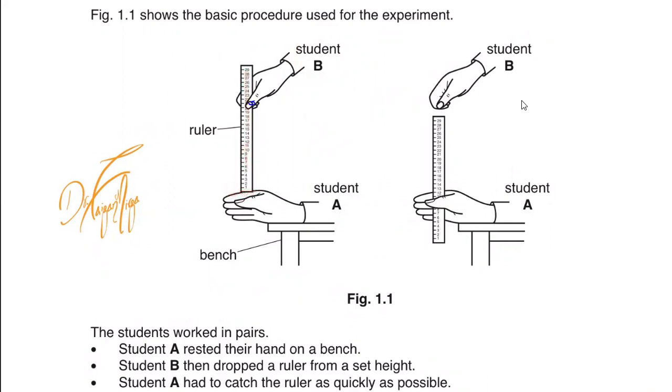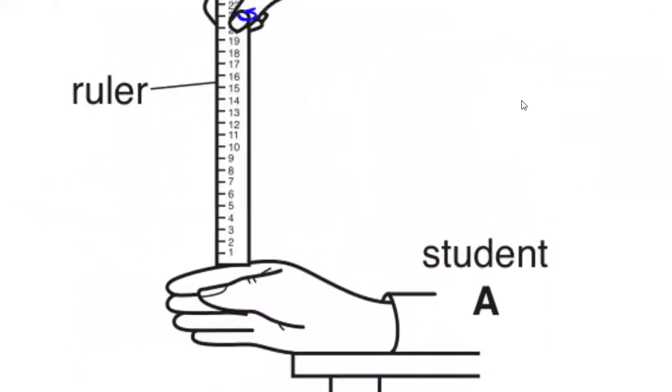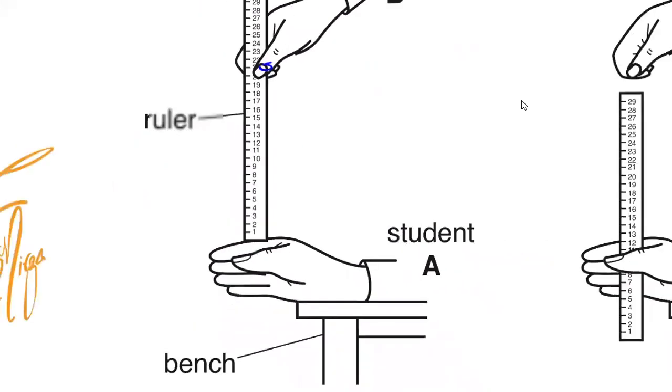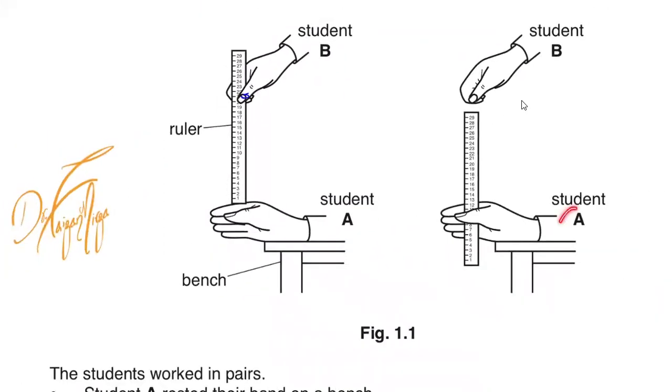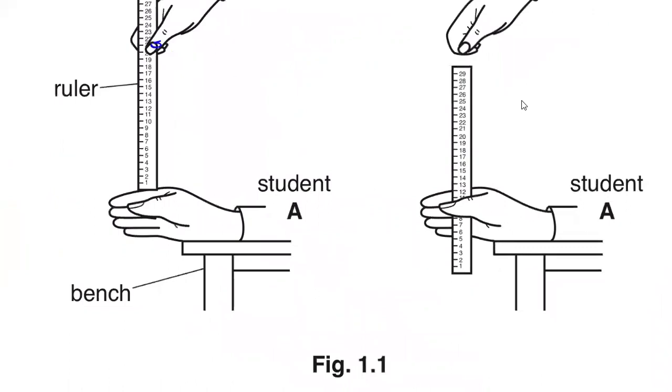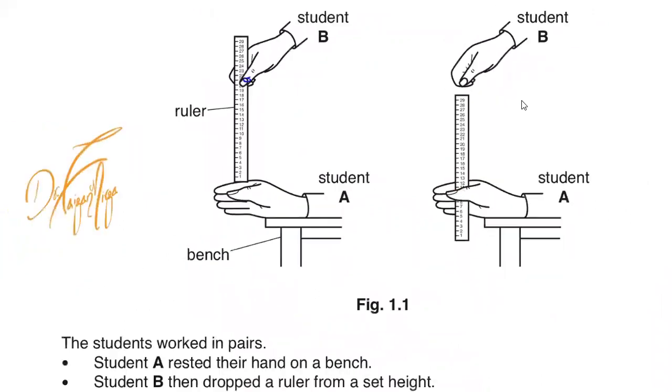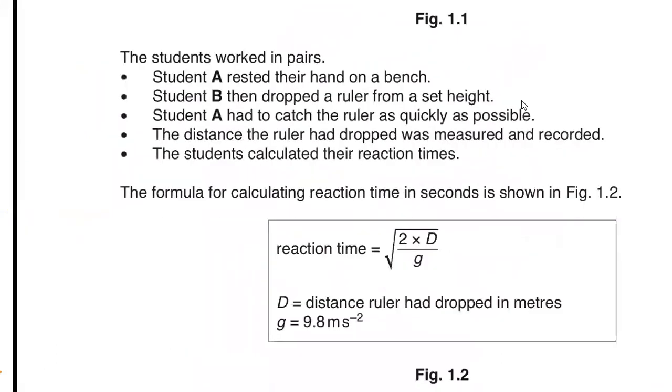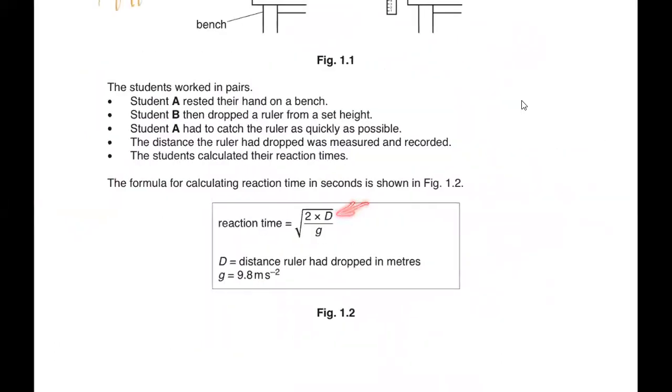This is the point which is 0 on the scale then 1, 2, 3, 4. You can see the numbers mentioned here on this scale and at the moment the scale is at 0 just above the finger of this student. Student B will drop this ruler and student A will have to catch it. The point at which the student catches it is the distance which is noted and it is added to the formula here.